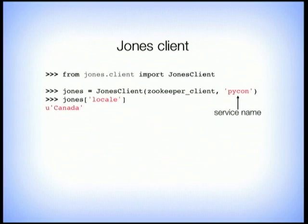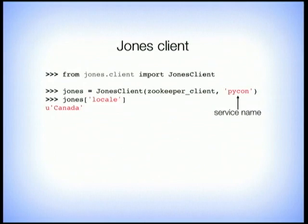Here's what the Jones client code looks like in your app. It's very straightforward — it inherits from a dict, so it acts like a dict. All you do is import and initialize it with your ZooKeeper client and your service name, which is 'pycon'. Then you can index into it like a dict — Jones['locale'] is 'Canada'.